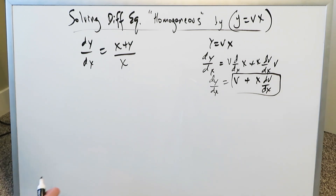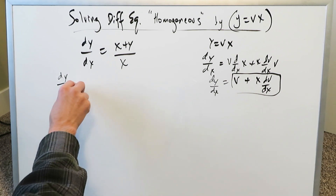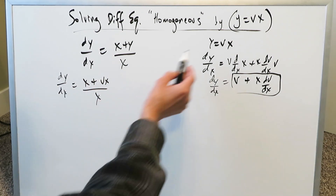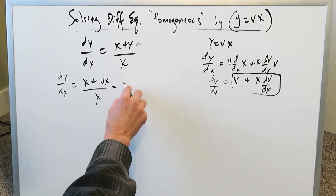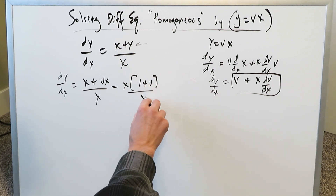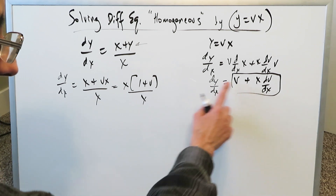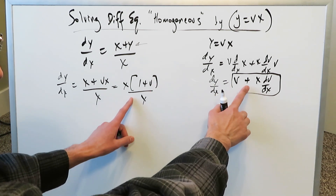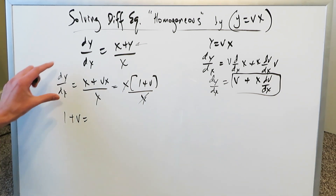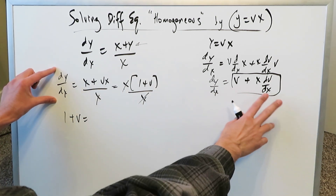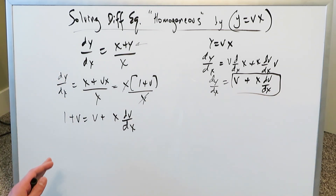Now wherever you have y, substitute vx. Dy over dx is equal to x plus vx over x. You can isolate the x to get 1 plus v, and this equals dy over dx. Since both expressions equal dy over dx, you can set them equal: 1 plus v equals v plus x dv over dx. You see how everything can now be separated.